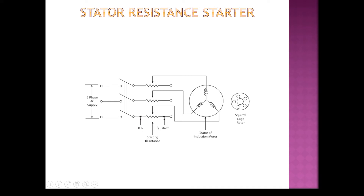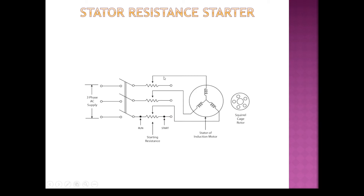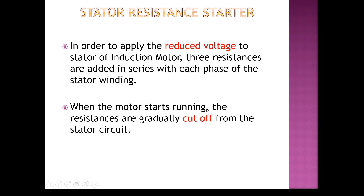In the start position, the rheostat position will be at maximum. Voltage will be dropped across these resistances and reduced voltage will be applied to the stator. If we apply reduced voltage to the stator, current will be reduced. So the initial high starting current will be reduced by reducing the voltage to the stator. Three resistances are added in series with each phase of the stator. When the motor starts running, resistances are gradually cut off from the stator circuit.